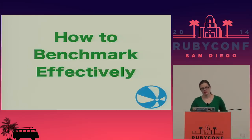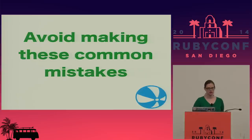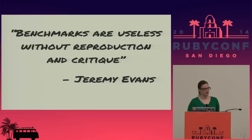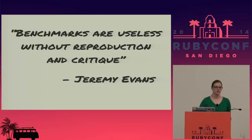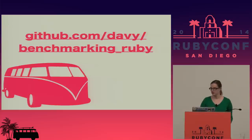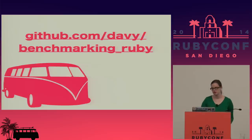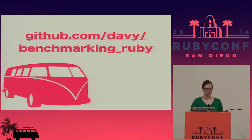Next I'm going to talk about how to benchmark effectively — otherwise known as avoiding common mistakes. Yesterday Jeremy Evans gave a great quote in his talk: benchmarks are useless unless, like other things in science, we can reproduce and critique them. All the code I'm going to be talking about today is available on GitHub. You can run these examples yourself, investigate how I set things up, and play around with it. Please feel free to do that — and give me input if I've screwed up in my benchmarks.